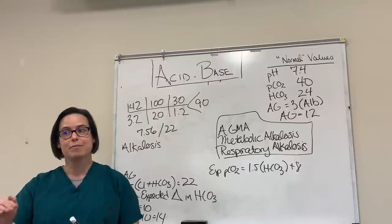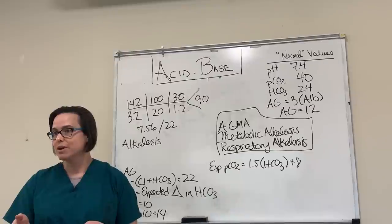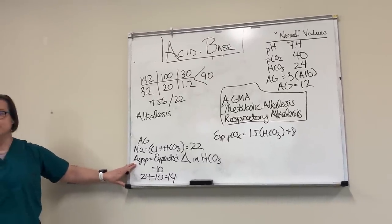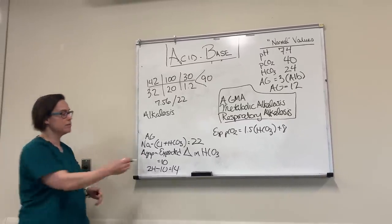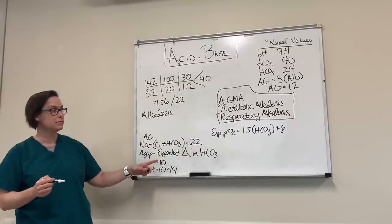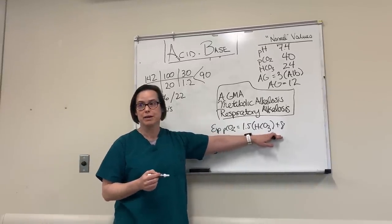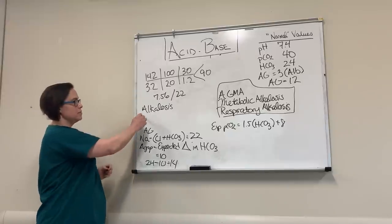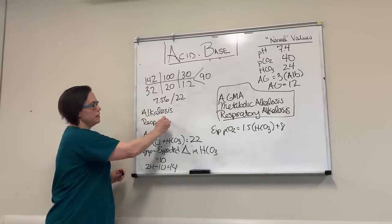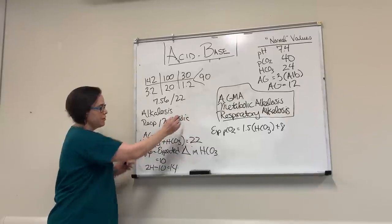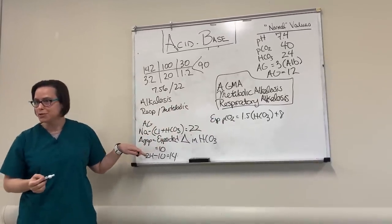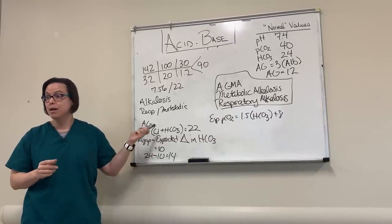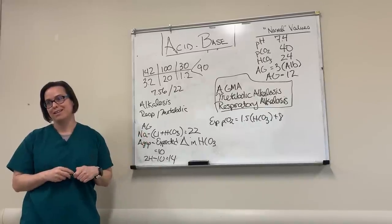That's our acid-base lecture for today. What I want you to take away: your delta gap is your expected change in bicarb — don't forget the 'change' part, that's what gets confusing. Don't forget what Winters' formula represents. Step one: what is it. Step two: respiratory or metabolic. Then 3A and 3B — anion gap and compensation — do both every time. It'll take you from a simple acid-base disorder all the way to a complex triple acid-base disorder.